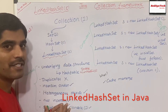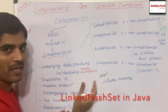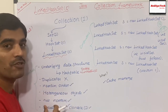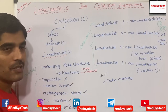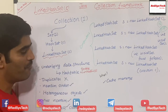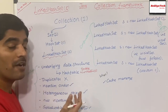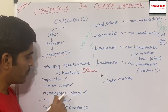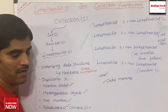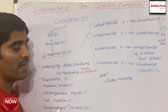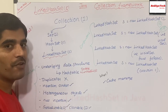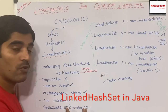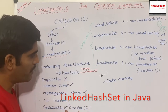LinkedHashSet has the underlying data structure of hash table plus doubly linked list. Duplicates are not allowed — we do not allow any duplicates to be inserted. And the insertion order is maintained. In our previous HashSet video, insertion order is not maintained, but in LinkedHashSet the insertion order is maintained. Heterogeneous objects are allowed, meaning any different type of data can be inserted. Null insertion is also allowed. And it implements the Serializable interface and also the Cloneable interface.